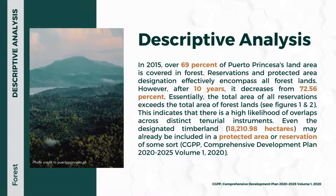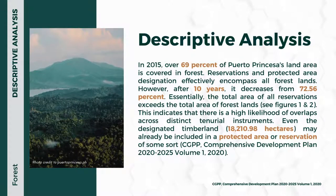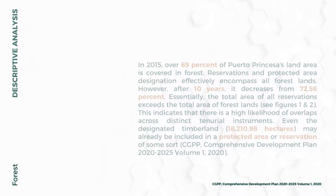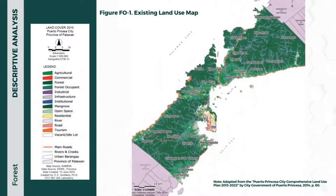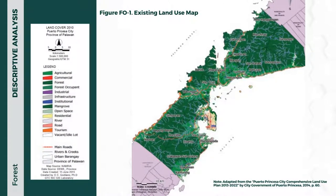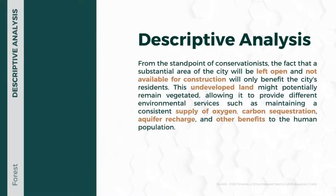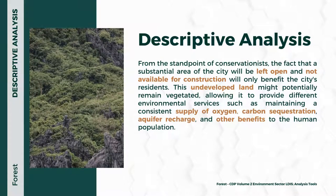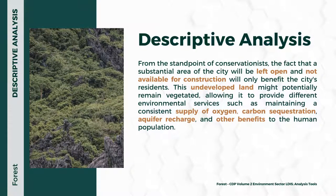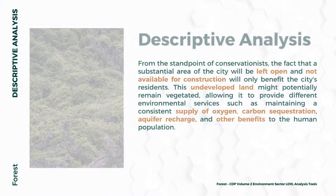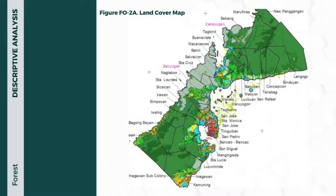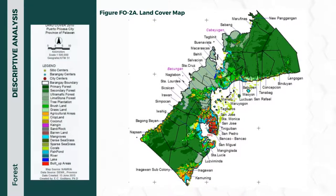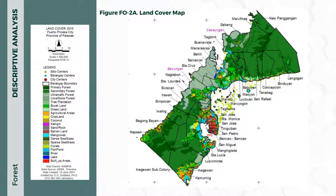In the same year, there is a 3.56% decline recorded from the 72.56% forest land cover in 2005. The majority of the land area is zoned to forest land use. The community has different points of view depending on their culture and organizations. For environmental conservation groups, the major benefits that forest land offers include oxygen supply, carbon sequestration, and aquifer recharge. The variety of forest types found in Puerto Princesa include primary, secondary, ultra-mafic, limestone, and mangrove forests.